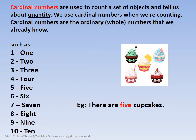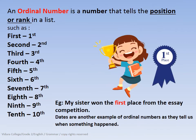If you want to use cardinal numbers in a sentence, we can describe: there are five cupcakes. We can describe the quantity of cupcakes by using cardinal numbers. An ordinal number is a number that tells the position or rank in a list, such as first, second, third.